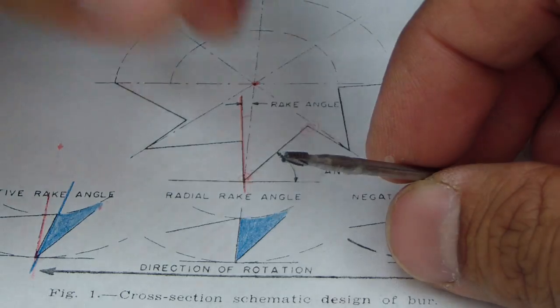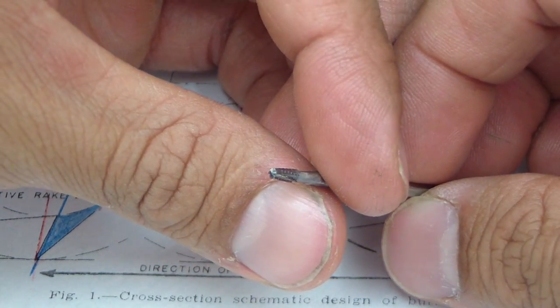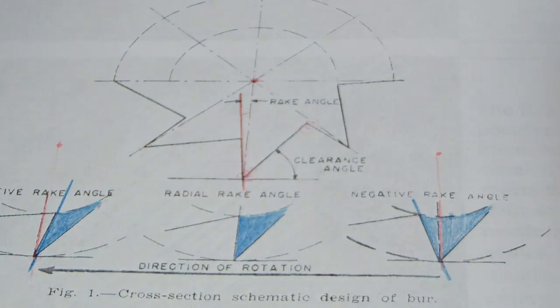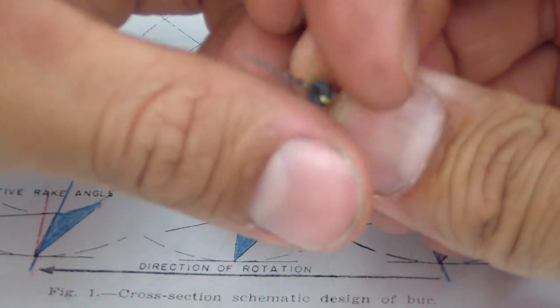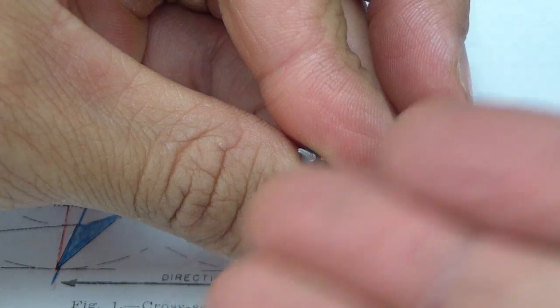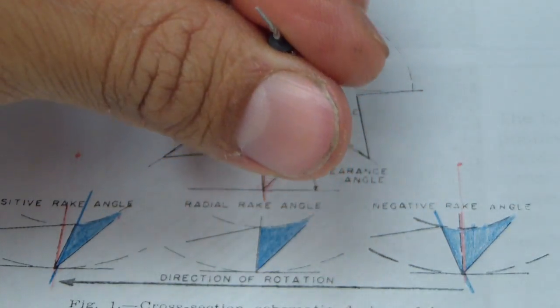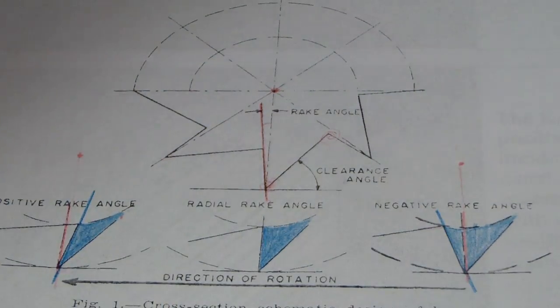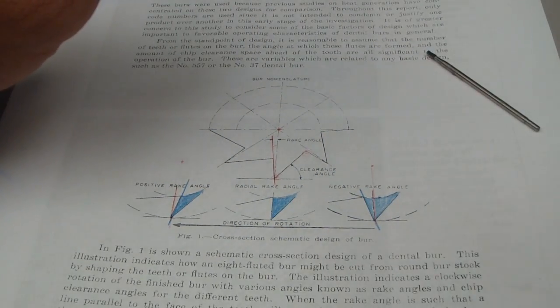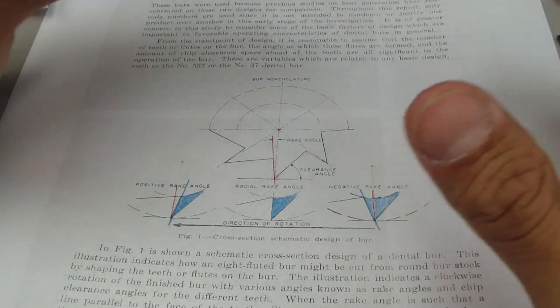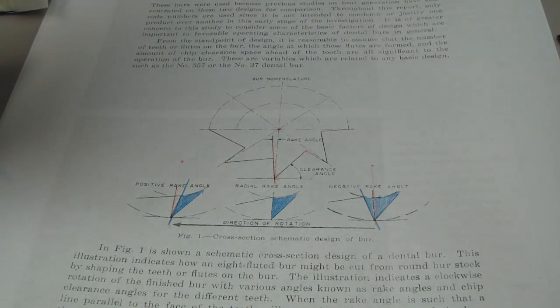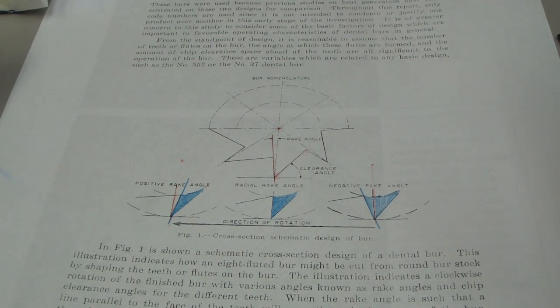and the same with endo files. Especially when I would see a brochure for an endo file they'd show a cross section, like this profile, they'd have their file and then they cut a section of it and show you what it looks like from the cross section, how great it is. I never really understood some of the terminology, so let's just try to talk our way through rake angle and how that applies to dental burrs and also endodontic files.